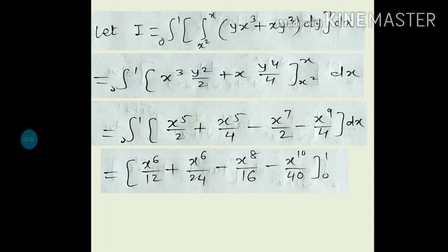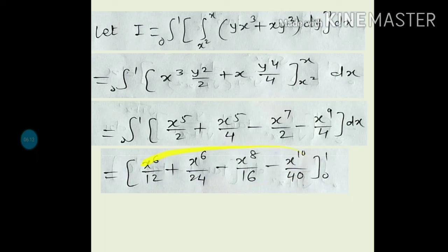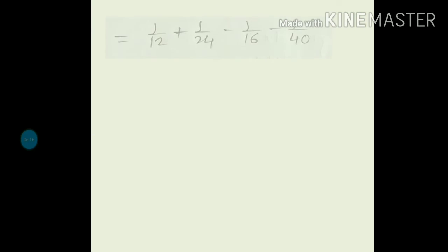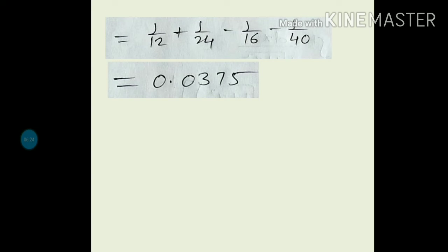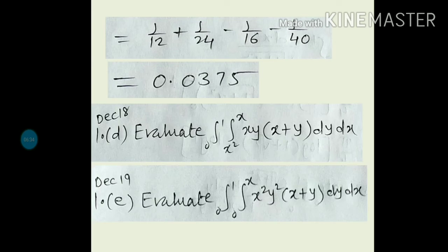After integration: x⁶/(6·2) = x⁶/12, then x⁶/(4·6) = x⁶/24, then x⁸/(8·2) = x⁸/16, and x¹⁰/(10·4) = x¹⁰/40. Substituting limits: lower limit gives all zeros. For upper limit x = 1, the answer is 1/12 + 1/24 − 1/16 − 1/40, which gives 0.0375. So we are done with this question.